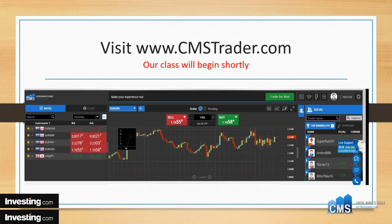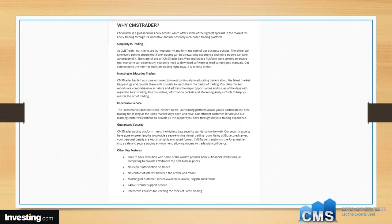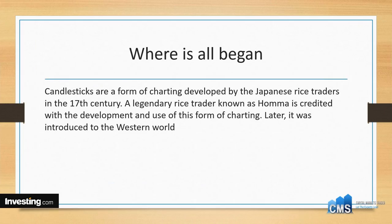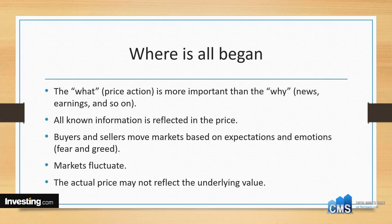Let's get on tonight with our class on Japanese candlesticks. It all started way back in the 17th century in Japan, and the use of candlesticks was developed by the rice traders. It eventually moved over to the western world, but it wasn't really well adapted because it was a complex, time-consuming process of putting these candles on charts.